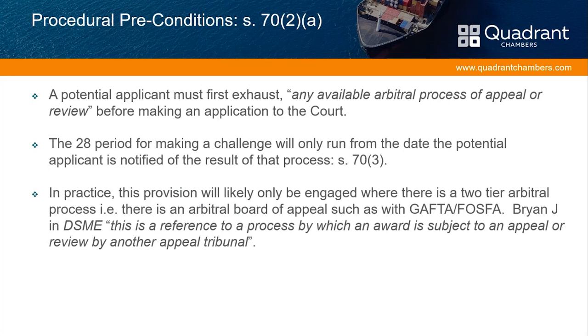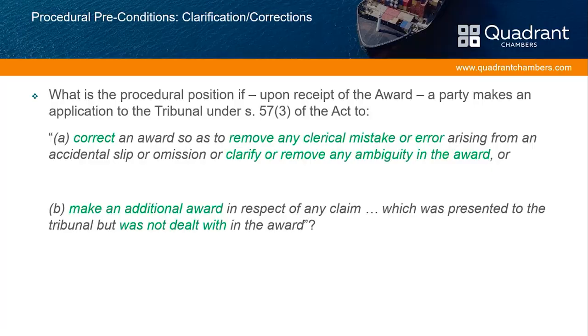Under section 70 subsection 2, the potential applicant must first exhaust any available arbitral process of appeal or review before making an application to the court. In practice, that provision is only likely to be engaged where there's a two-tier arbitral process, such as you'll come across in GAFTA and PHOSFA arbitrations. What an available arbitral process of appeal or review does not refer to is a section 57 application to the tribunal that decided the first instance award, where you're asking that tribunal to revisit its conclusions or issue a clarification.